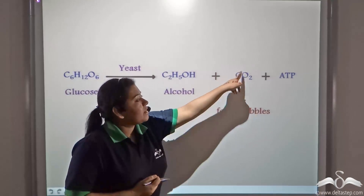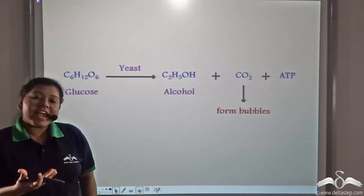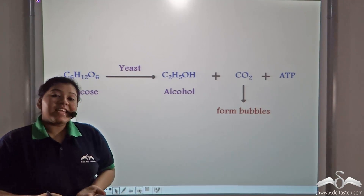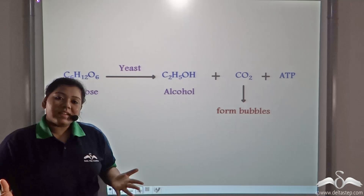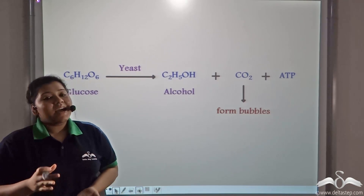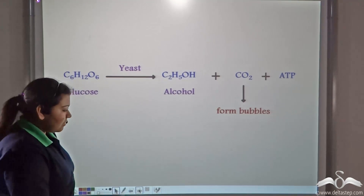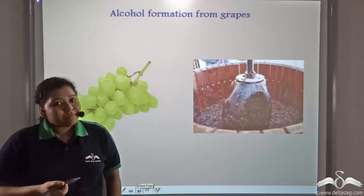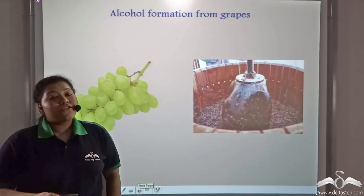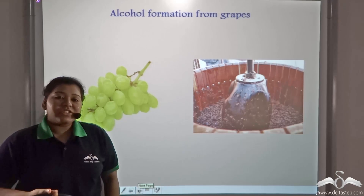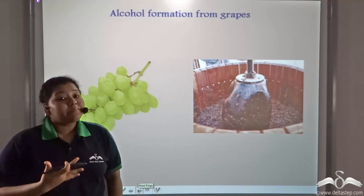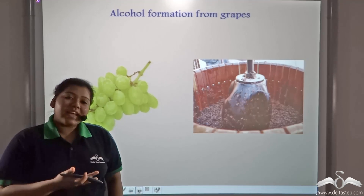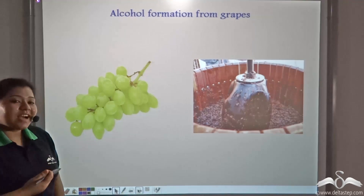This carbon dioxide forms air bubbles. When the bread is baked, these bubbles expand and give a light and spongy texture to the bread. This formation of alcohol from glucose by the action of yeast is also used by breweries to manufacture alcohol, wines, and beers.